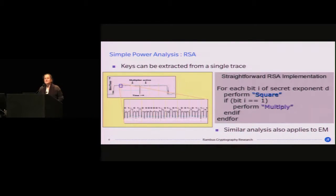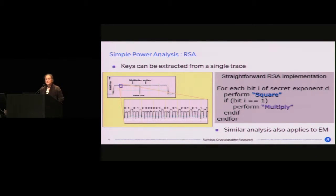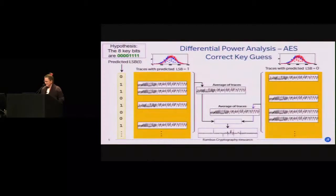Let me start with RSA — this is super simple and visual. In RSA you exponentiate to a secret exponent d, and this exponent has bits. If you use a typical square-and-multiply algorithm without any precautions, for each zero bit you do a square, and for each one bit you do a square and a multiply. If you plot a power trace of what's going on on your chip, you'll see that the multiplies look different from the squares. When you see a big peak preceded by a smaller one, that's typically a multiply preceded by a square; if you only have a small one, that's a square only. Essentially you can read the exponent off a single power trace — this is simple power analysis.